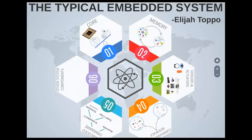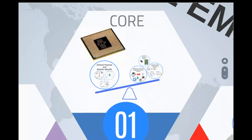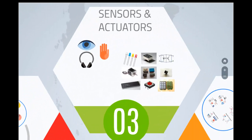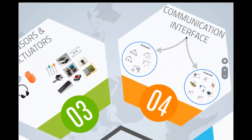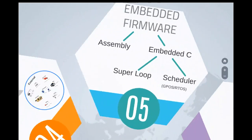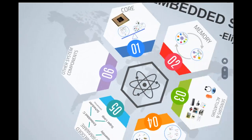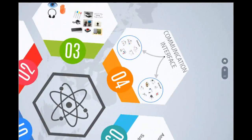Hey friends, this is Elijah here. Welcome to Part 2 of Typical Embedded Systems. In the last video we saw that a typical embedded system can be composed of six parts, out of which we discussed the first three: the core, the memory, and sensors and actuators. In this video we'll talk in detail about different communication interfaces, embedded firmware, and other system components.